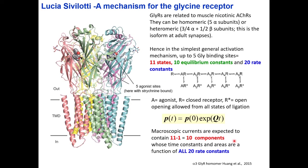Those of you who are electrophysiologists may have fitted synaptic currents, for instance, and may have fitted exponentials. I have never fitted more than two components — it's very difficult. So with 10 components, macroscopic currents are not very likely to be informative.